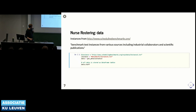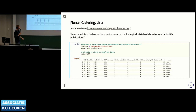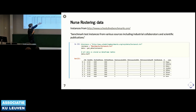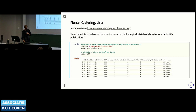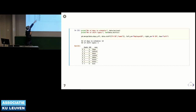We use instance one, which is fairly small—helpful for visualizations. The data shows eight staff members with attributes including maximum and minimum consecutive shifts. This specific instance has 14 days over which nurses are scheduled and one shift type. The data also includes days off: when which nurse requested which days off.